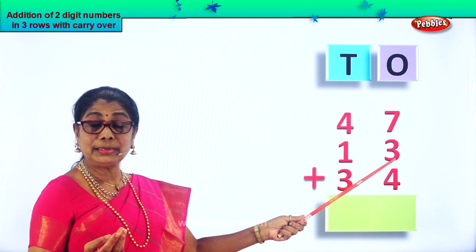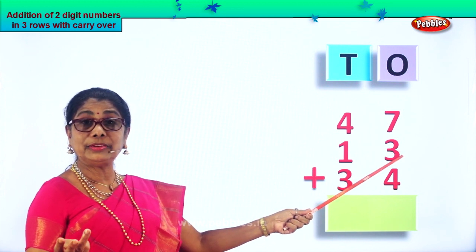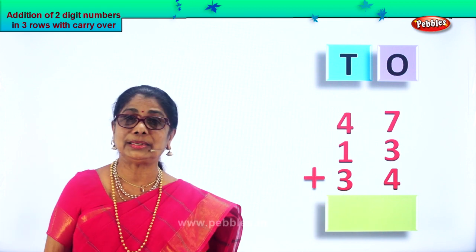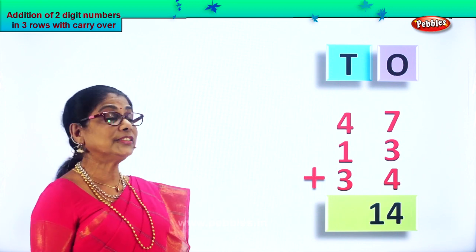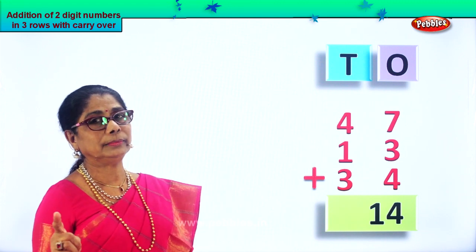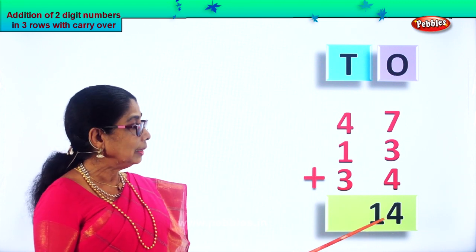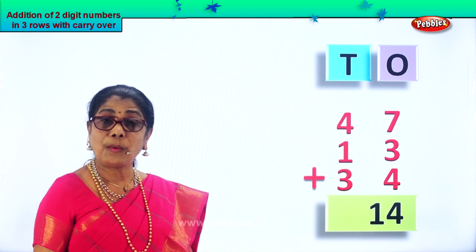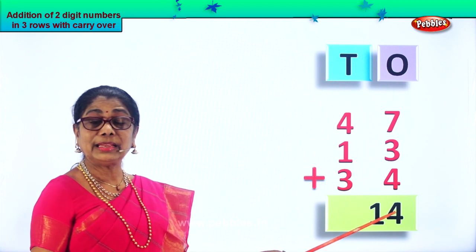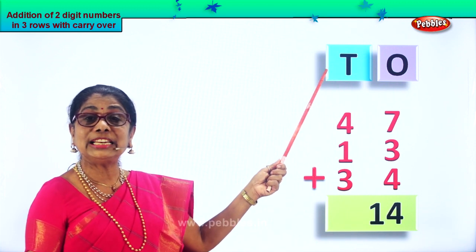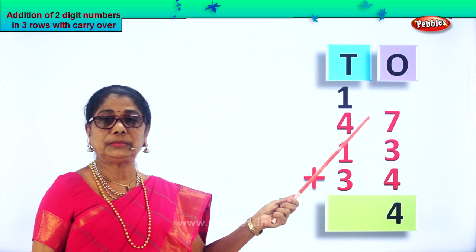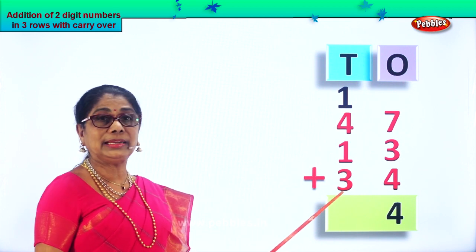Then we have four more. Ten in the mind and four in your fingers. After ten: eleven, twelve, thirteen, fourteen ones. So we put fourteen ones here — that is ten plus four. Ten ones become one ten. We leave the four ones in the ones place and carry ten ones to the tens place, where it becomes one ten.